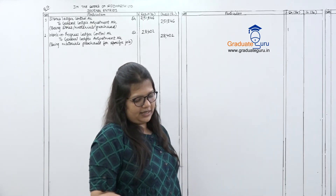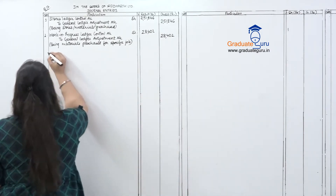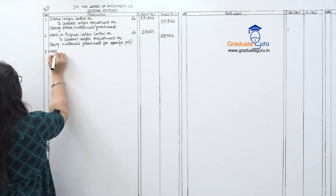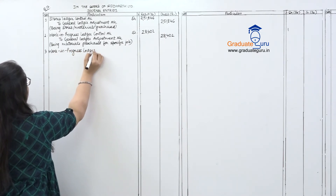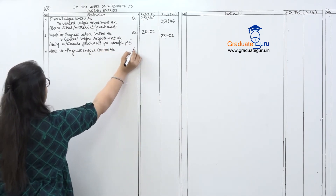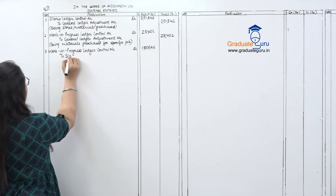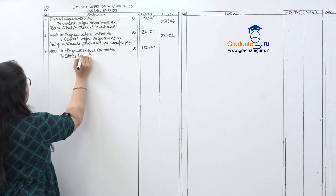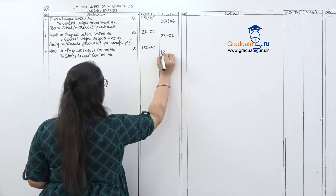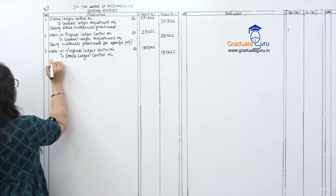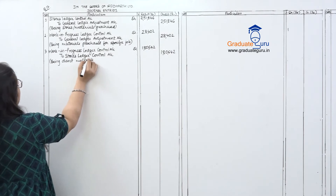Next, stores issued direct and indirect. First, the direct issue. Direct materials go to WIP. Journal entry: Work in Progress Ledger Control Account debit 180,642, to Stores Ledger Control Account 180,642. Narration: being direct materials issued.